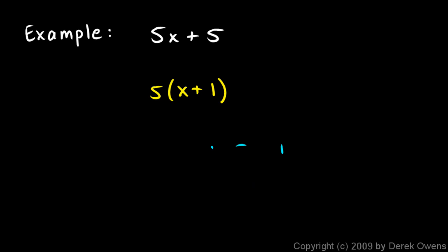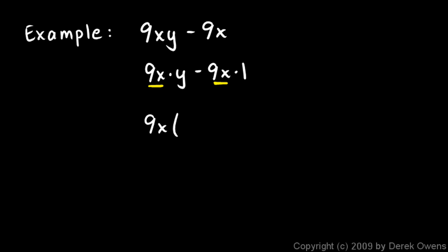A similar thing happens in the next example: 9xy minus 9x. Notice what I can factor out of each term. If you want to, you can rewrite this. You could say 9x times y minus 9x times 1. And then you could see the 9x present in each term. And I could factor it like this: 9x times (y minus 1).